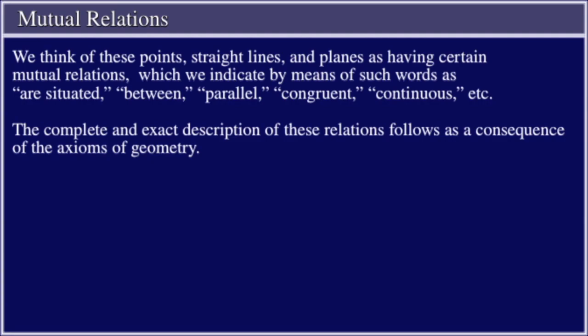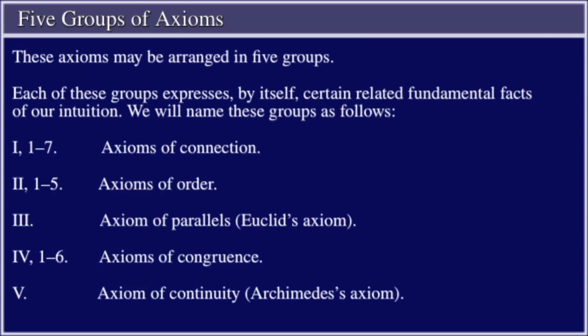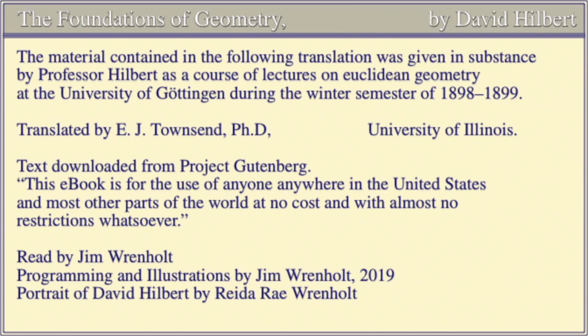The complete and exact description of these relations follows as a consequence of the axioms of geometry. These axioms may be arranged in five groups. Each of these groups expresses by itself certain related fundamental facts of our intuition. We will name these groups as follows: one, axioms of connection; two, axioms of order; three, axioms of parallels — Euclid's axiom; four, axioms of congruence; five, axioms of continuity — Archimedes' axiom.